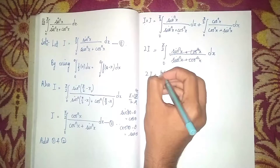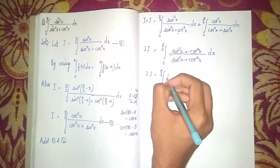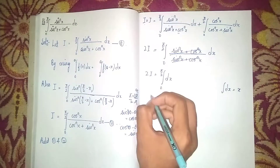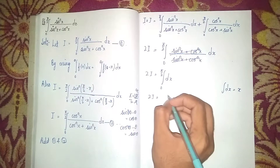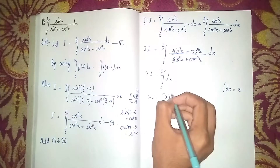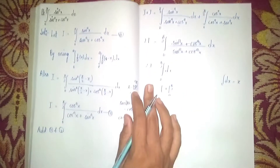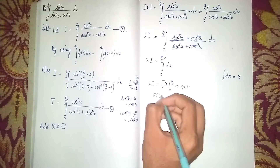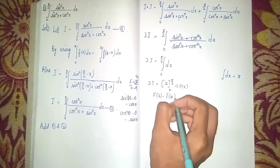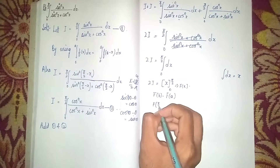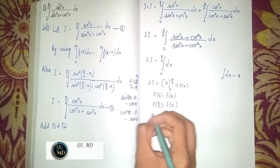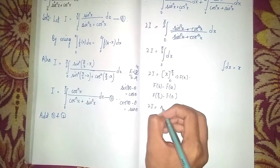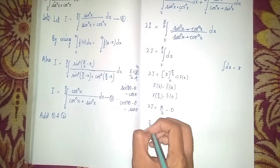The numerator and denominator cancel each other, so 2I = ∫₀^(π/2) dx. Integrating, we use ∫dx = x, so 2I = [x] from 0 to π/2. Applying the limits — upper limit π/2 minus lower limit 0 — gives 2I = π/2 − 0 = π/2.